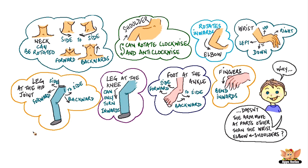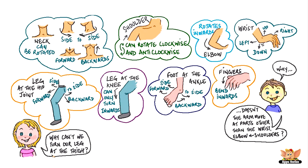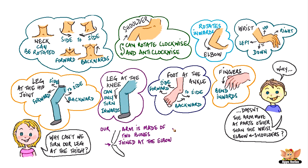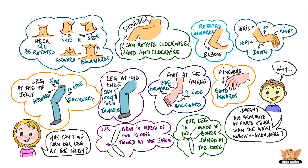But why doesn't the arm move at parts other than the wrist, elbow and shoulders? Why can't we turn our leg at the thigh? That's because our arm is not made of one single bone — it's made of two bones joined at the elbow. Similarly, our leg is made of two bones that are joined at the knee.